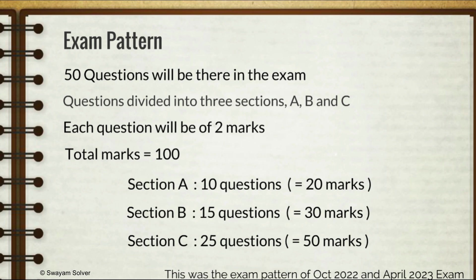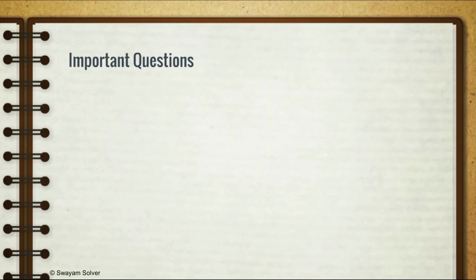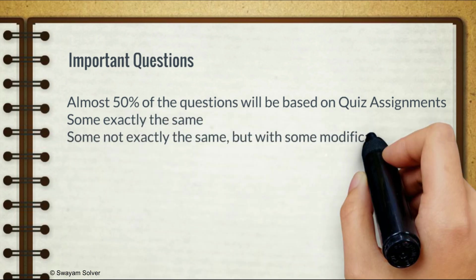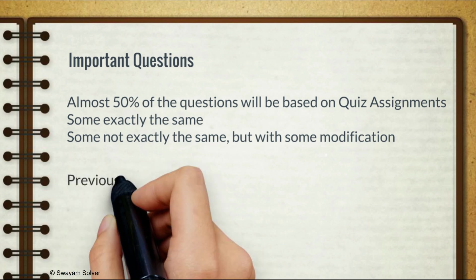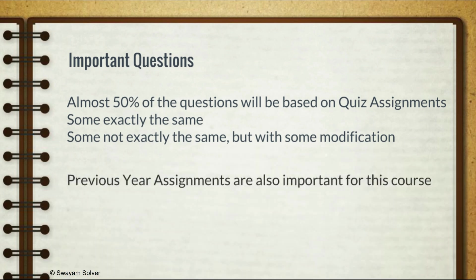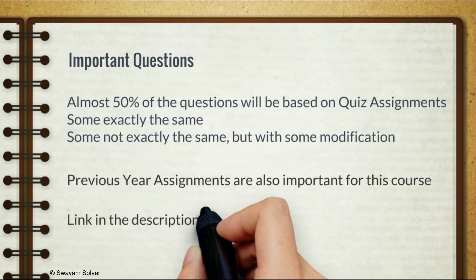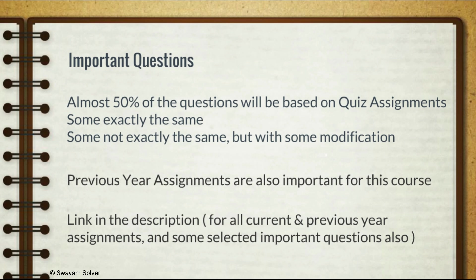Now let's see what are some important questions for the exam. Almost 50% of the questions in your exam will be based on your assignments, either directly or indirectly. Either there would be a question from your assignments as it is or with a little bit of modification. In this course programming in Java, questions are asked from previous year assignments also, so the most important questions turns out to be current quiz assignments and previous year quiz assignments. I will leave a link in the description for all of them. Not all the questions will come from assignments. There would be some general questions like is HTML case sensitive or what data structure does recursion use. These kind of questions would also be there but mostly it would be like assignments.